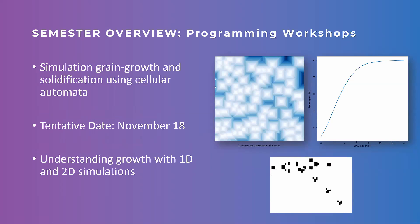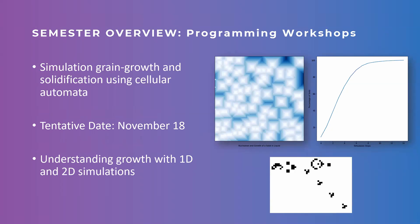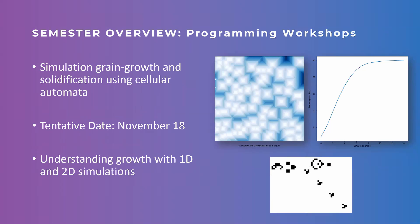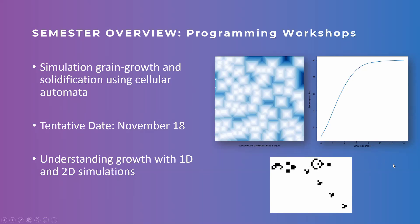Our final tutorial will be making a model of grain growth and solidification using cellular automata. You can see a little animation of what cellular automata are — they're kind of like agents that change state based on the current state of the simulation. You'll learn more if you attend. That tutorial is tentatively scheduled for November 18th. That's all for our planned tutorials.